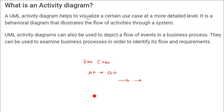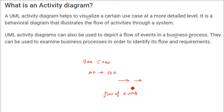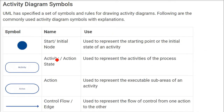Activity diagrams are employed to represent the flow of events in business processes. They may be used to examine business processes in order to identify two things: first is flow, and the other one is requirements. Here are the symbols which are generally used in the activity diagram.